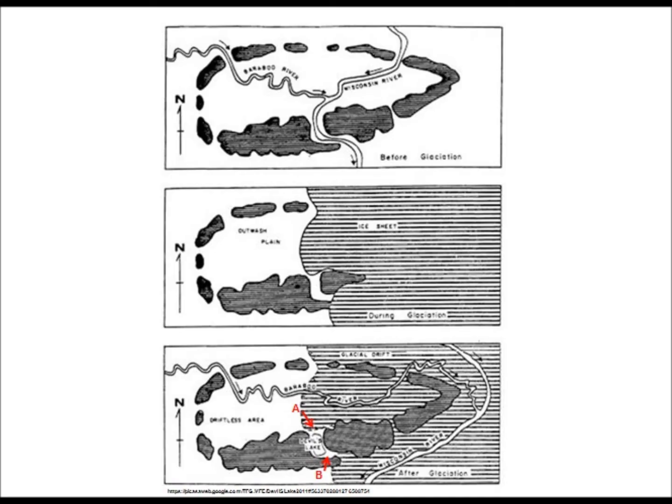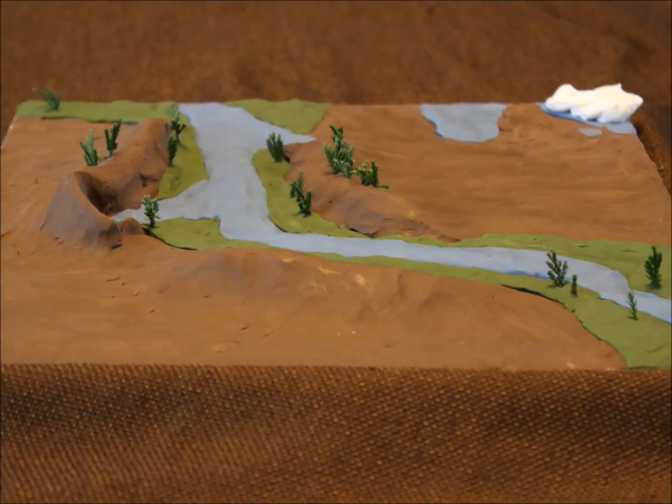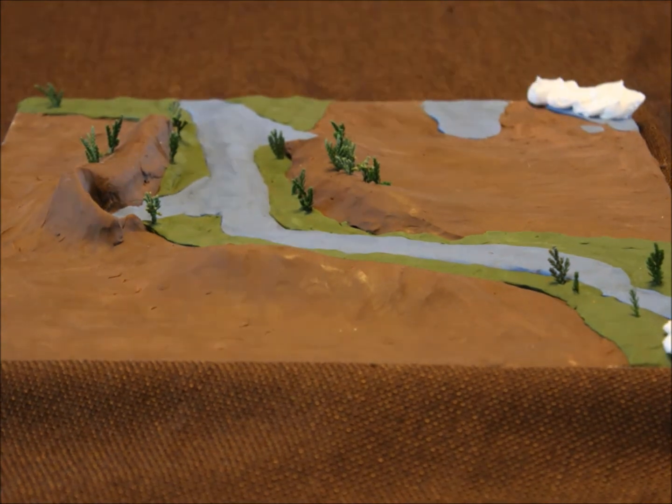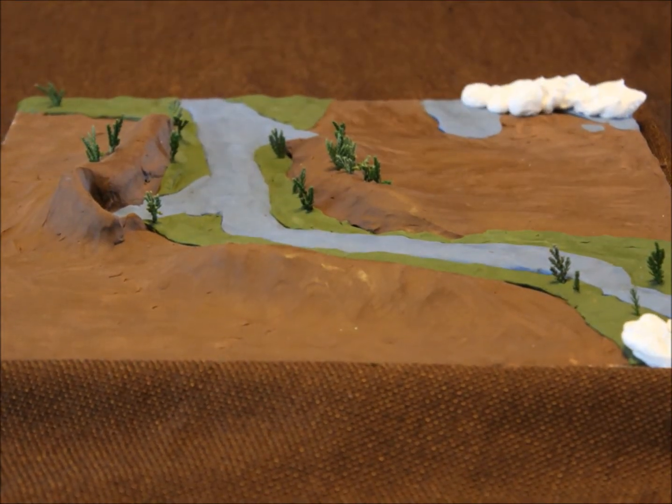The Green Bay lobe advanced southward and covered the southeast end of Baraboo, which is depicted in the middle figure. The ancient Wisconsin River flowed through the Baraboo bluffs, which can be seen in the top figure. The glacier's advancement and the sediment left behind caused the Wisconsin River to be redirected, which is shown in the bottom figure. I created an animation showing the Green Bay lobe advancing into the southeast end of Baraboo.